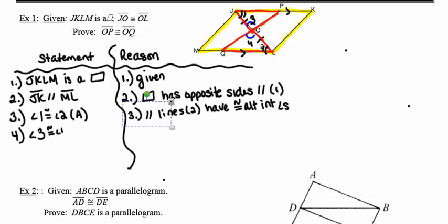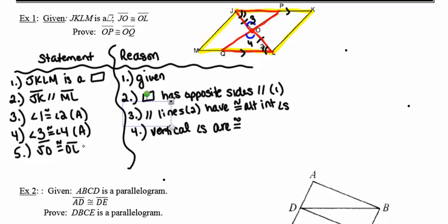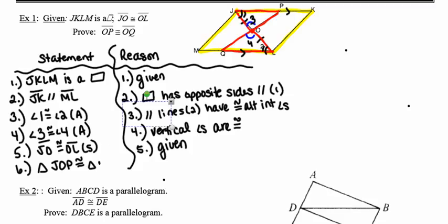I'll label the vertical angles at O as angles 3 and 4. Angles 3 and 4 are congruent because they're vertical angles. Next, I state that segments JO and OL are congruent — given. I can now conclude that triangles JOP and LOQ are congruent by angle-side-angle. When naming the triangles, be careful to match corresponding vertices: angle J in the top triangle corresponds to angle L in the second triangle, and so on.